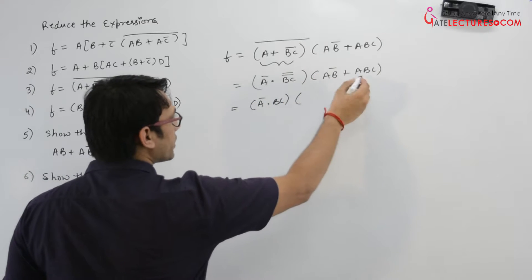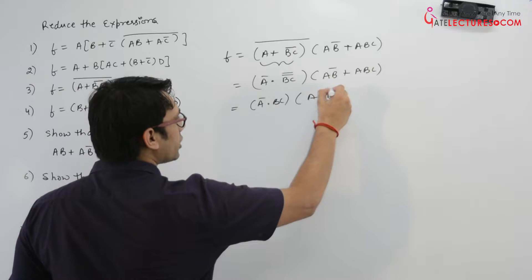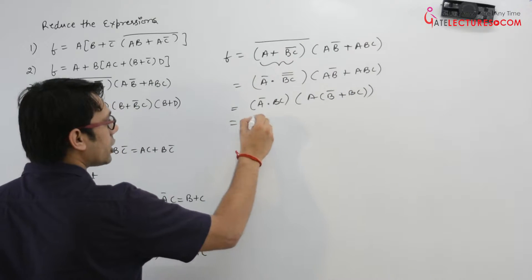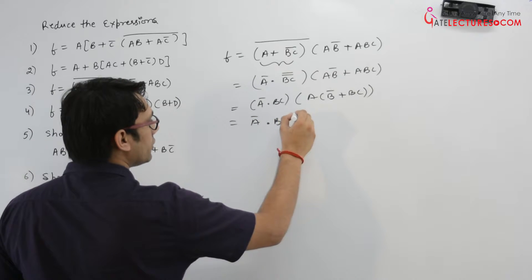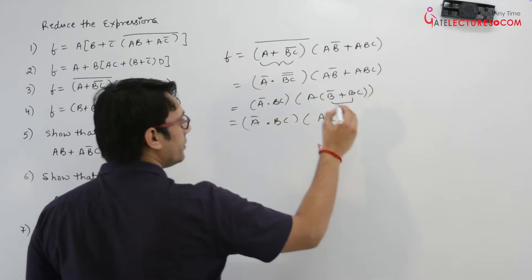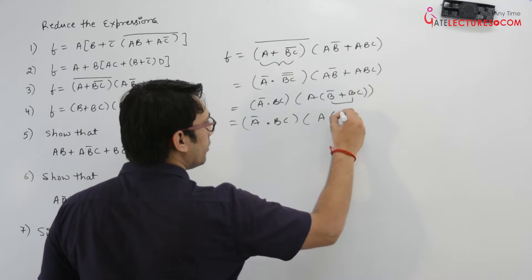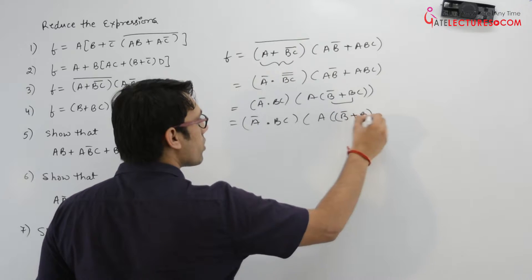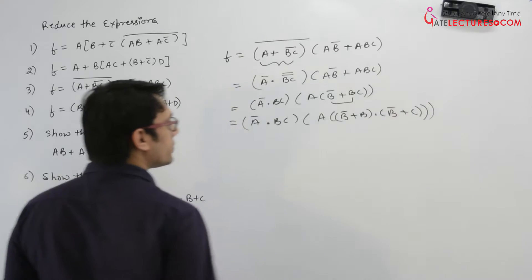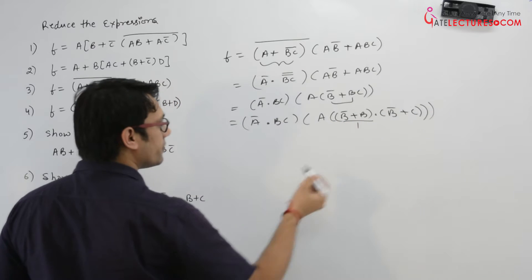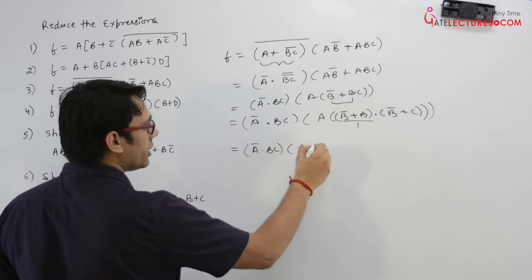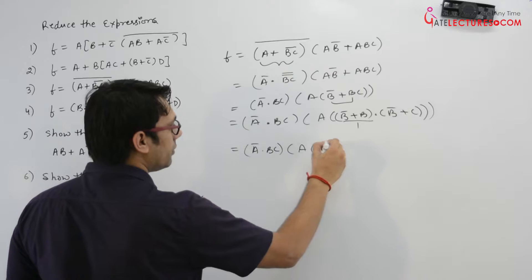Here you can take a as common, so it will be b' + bc. Distributing b, we get b·b' + b·c, which simplifies to b'+ bc. So this expression can be written as a'·bc, then a·(b' + c).